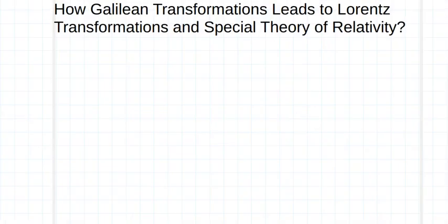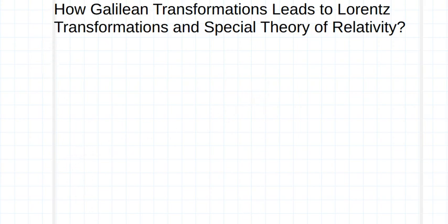In the earlier lecture I gave a brief introduction to Galilean transformation. Now here I will discuss how Galilean transformation leads to Lorentz transformation and special theory of relativity. I will split this into two parts. In this first part I will start with the need of an experiment known as the Michelson-Morley experiment. So let me recall Lorentz transformations.